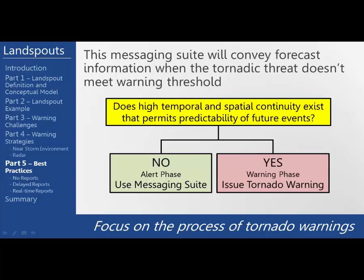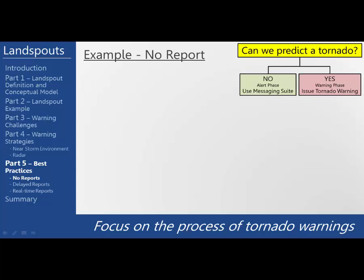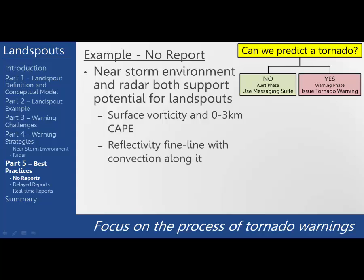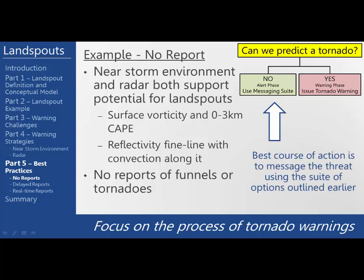Over the next few slides, we're going to go over four different scenarios using the same data from the case shown earlier in this module. The first example is with no reports. Recall that the near-storm environment and radar both support the potential for landspouts. The SPC mesoanalysis field we focused on was the surface vorticity and 0-3 km CAPE. There was also a reflectivity fine line with convection along it as seen from the half-degree radar scan. In this example, there were no reports of funnels or tornadoes. Because we do not have temporal or spatial continuity to support a tornado, the best course of action is to message the threat using the suite of messaging options.